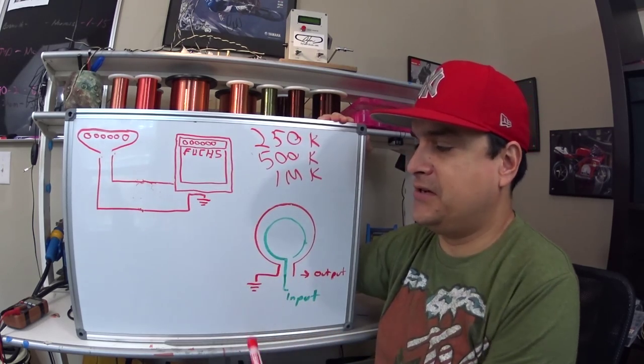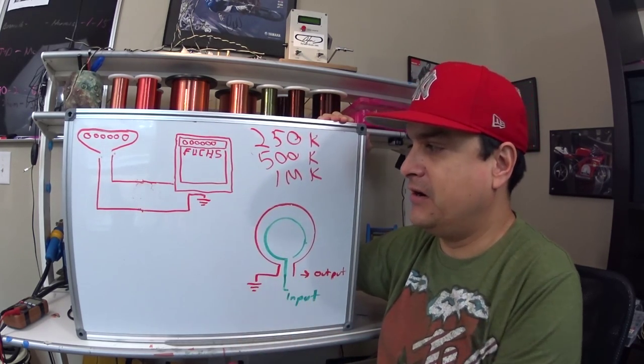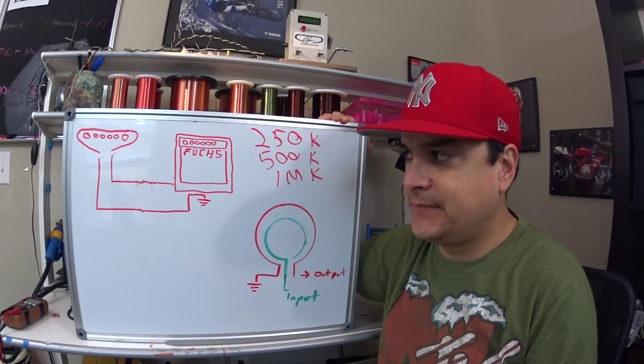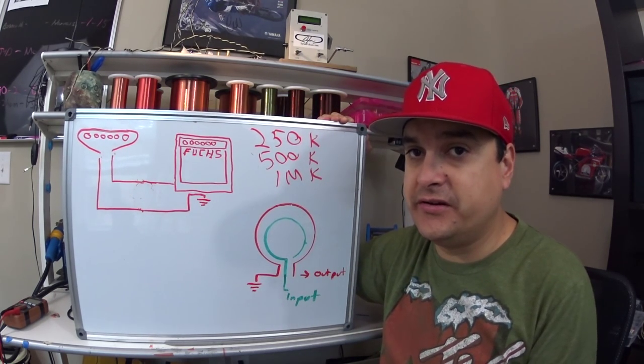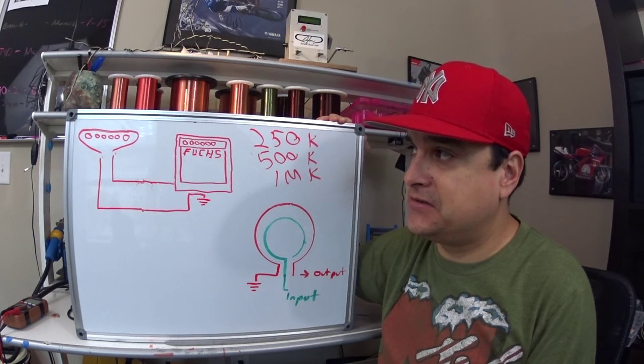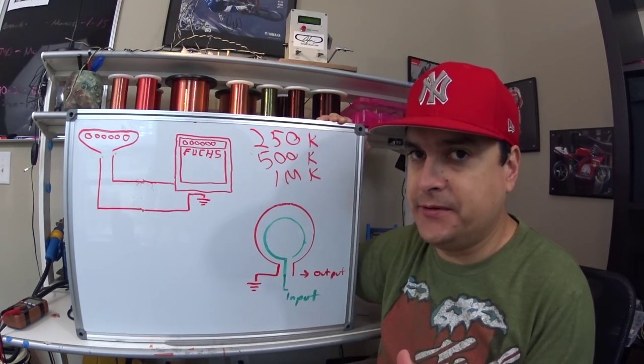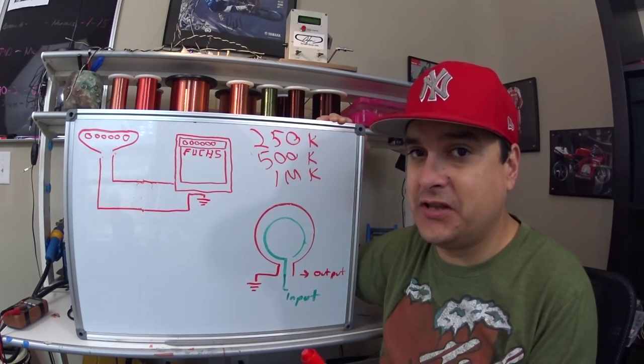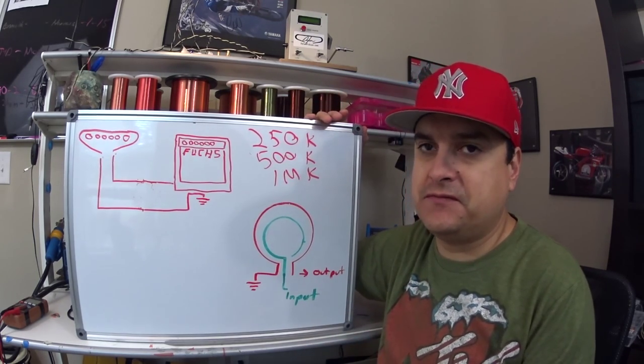Usually 250k pots are for single coils, 500k pots are for humbuckers. That's kind of the normal buzzword on the internet, right? That's actually the most common. Let's talk about why those choices are made and if they really are a rule that we should follow every time.